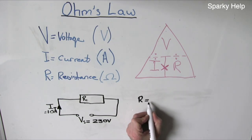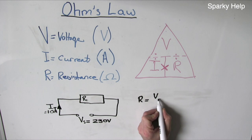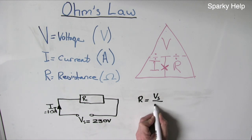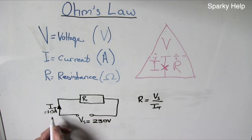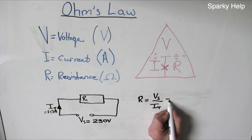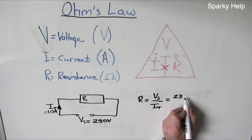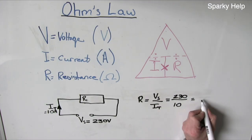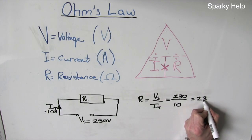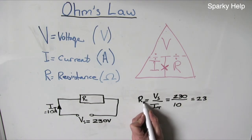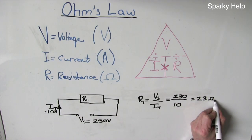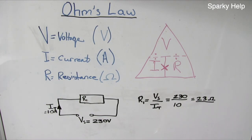Therefore, R is equal to V divided by I, and the figure is 23 ohms. Don't forget the unit, because it's R that we're calculating — 23 ohms. Remember, resistance is opposition to current flow.